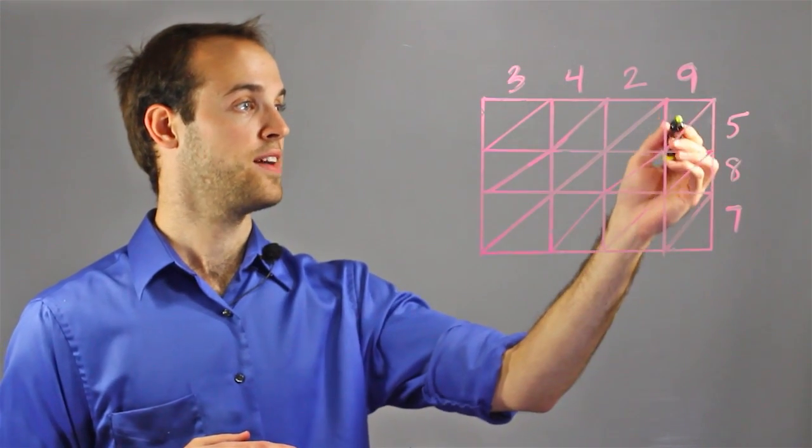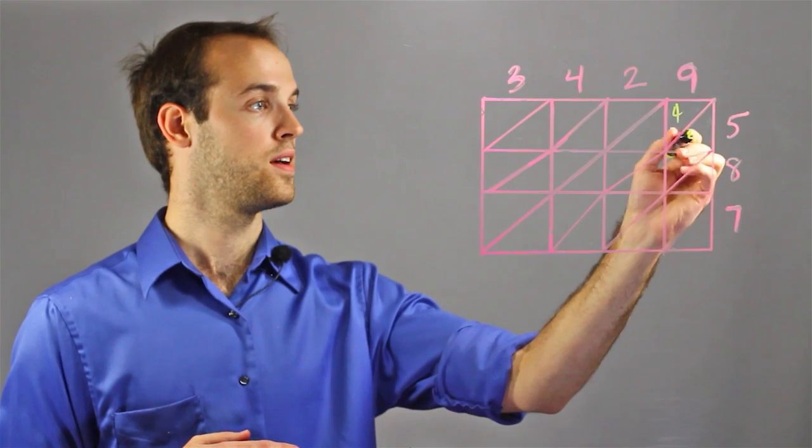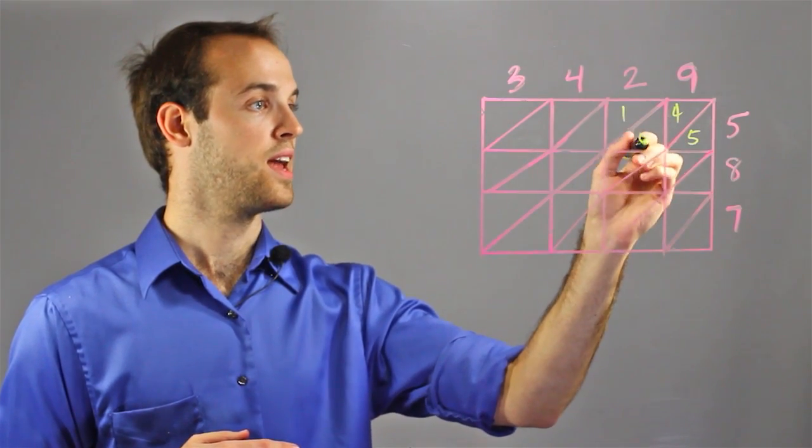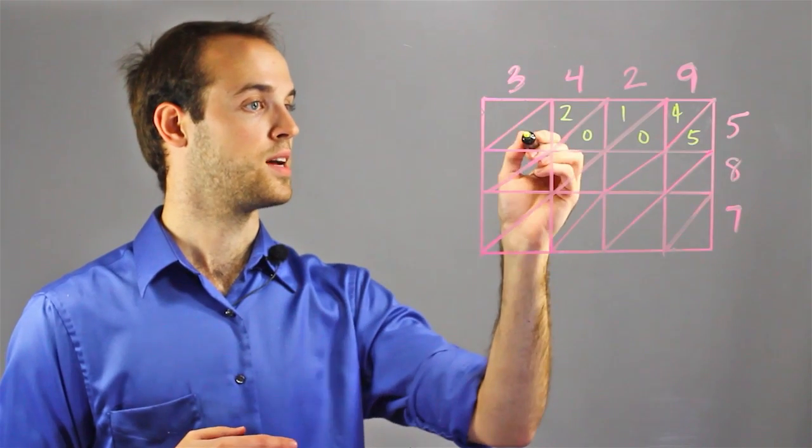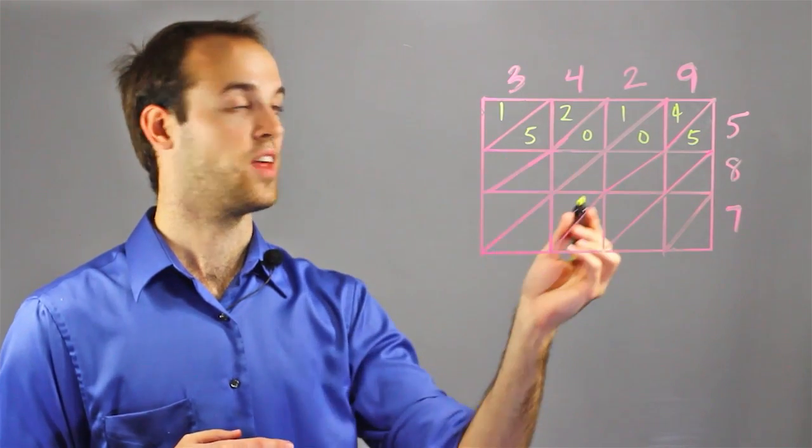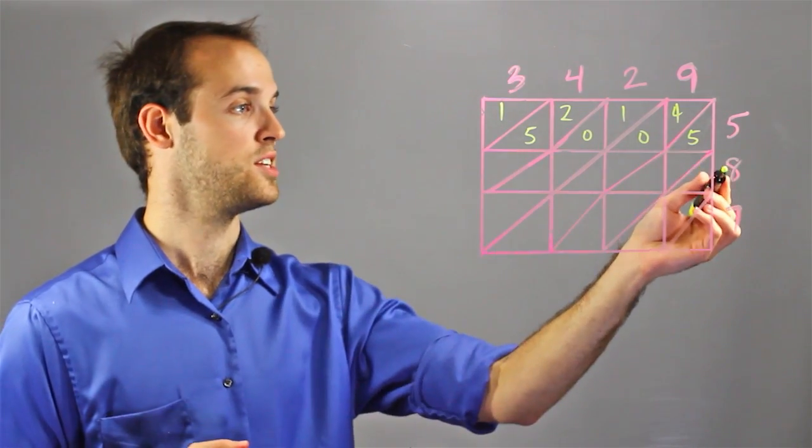I'm going to take 9 times 5, which is 45, 5 times 2 is 10, 5 times 4 is 20, 5 times 3 is 15, and then I'm going to move on to my next row and continue.